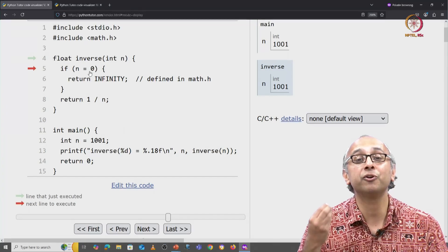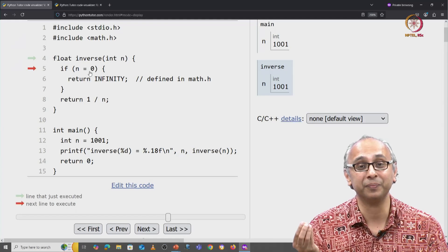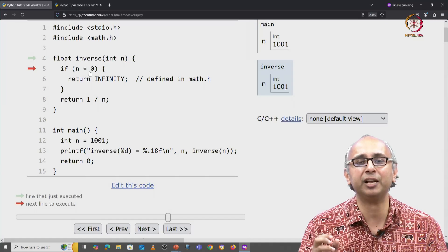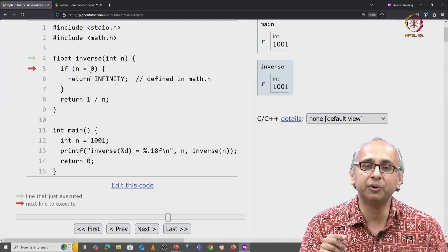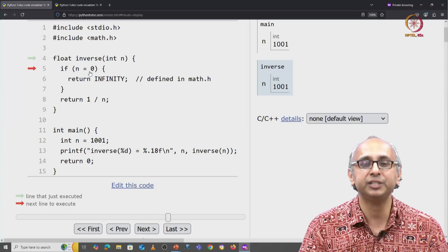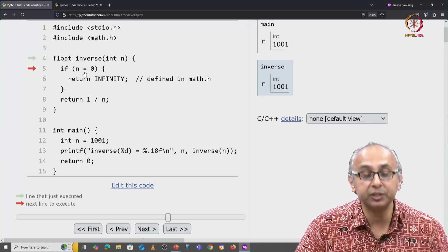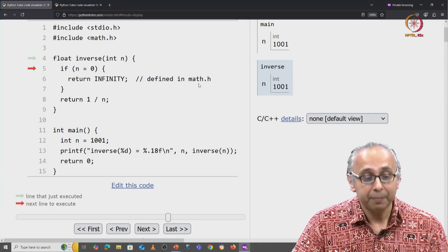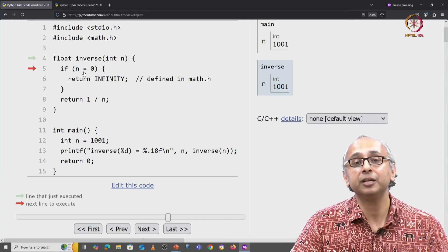Remember 0 is falsy in Python. Exactly the same thing happens here. Any non-zero value is truthy and 0 is falsy for C. So this will do two things. It will set n equal to 0 but then this will evaluate to false and so the red arrow will not go into the if condition.